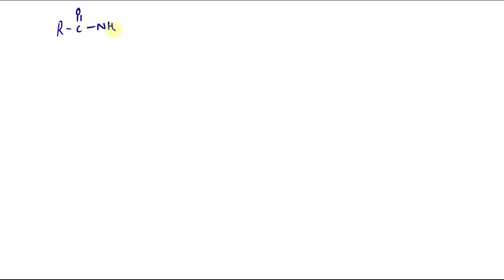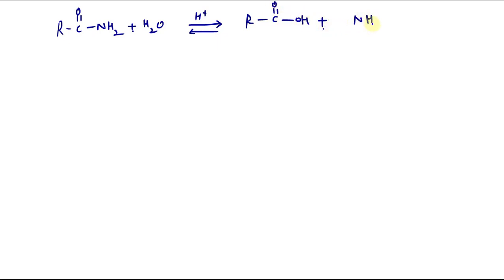Upon hydrolysis, amides also produce carboxylic acids because these are derivatives of carboxylic acid. Under these conditions, upon hydrolysis, they give carboxylic acids. This hydrolysis of amides can be done under basic as well as acidic conditions.